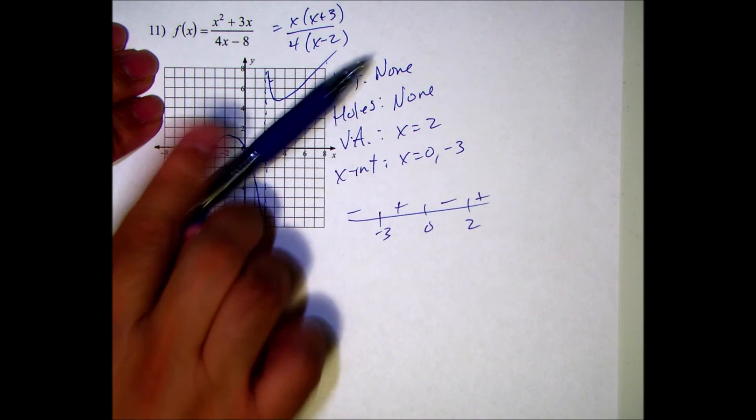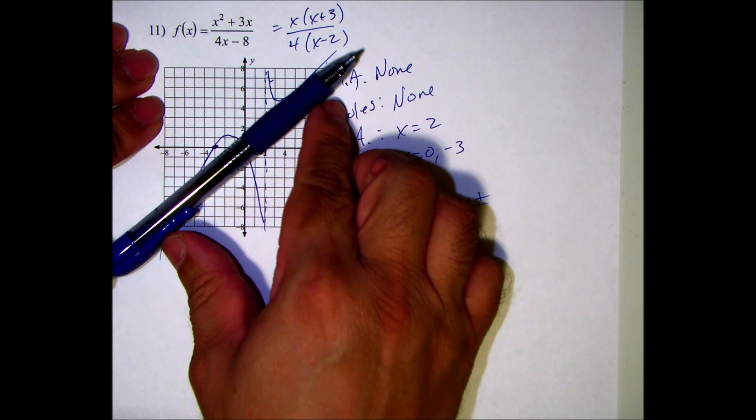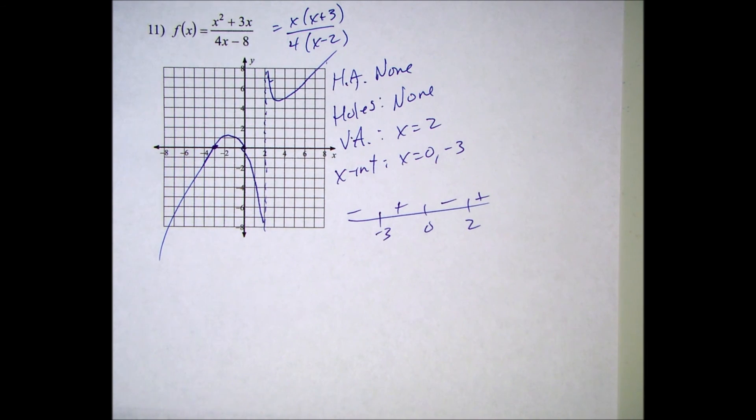There's that possible oblique asymptote there, which we're skipping. That's it, that's number 11.